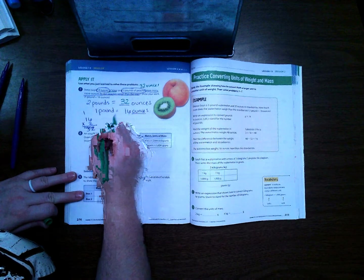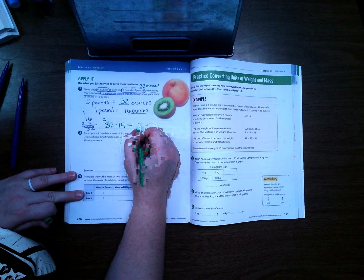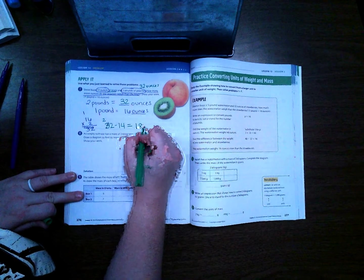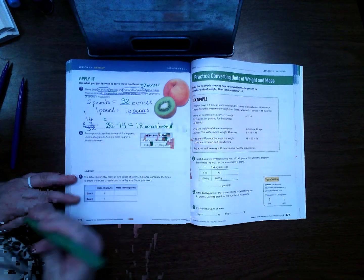I can't take 4 from 2, make this a 12, so we've got 8. 18 ounces more is our answer there.